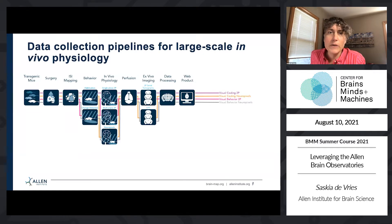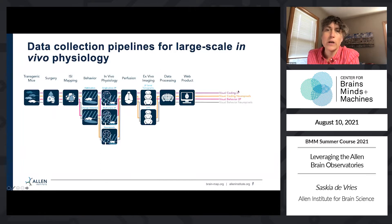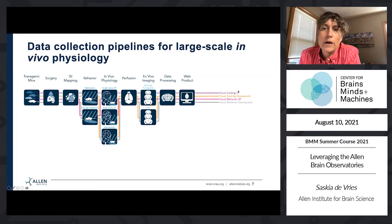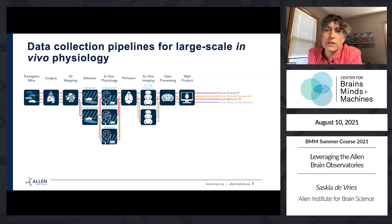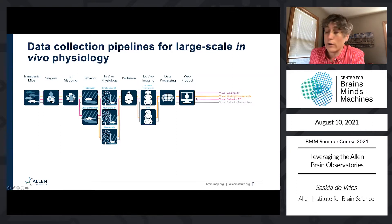I'm going to be talking mostly about the visual coding two-photon dataset, which was our first dataset that we released. It uses calcium imaging to record the activity of hundreds of cells at a time in response to a battery of different visual stimuli.